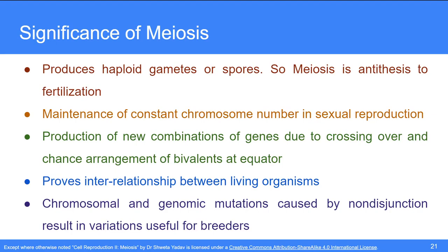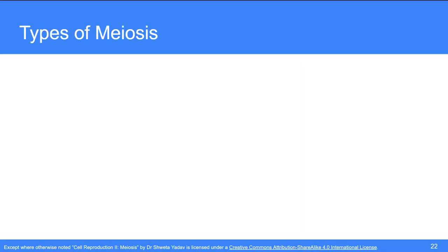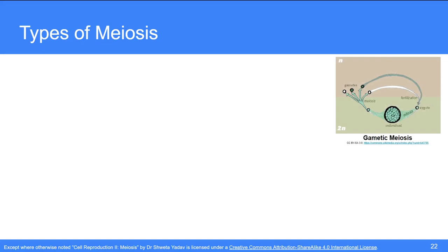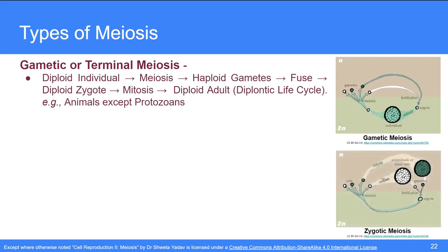On the basis of period and site of occurrence, meiosis is of three types. The first is gametic or terminal meiosis, in which diploid individuals form haploid gametes by meiosis during gametogenesis in gonads. These haploid gametes fuse to form a diploid zygote, which undergoes mitosis to form a diploid adult. This kind of life cycle is known as diplontic, where the adult is diploid and shows gametic meiosis. It is found in all animals except protozoans.